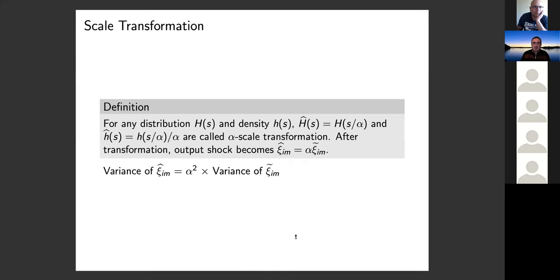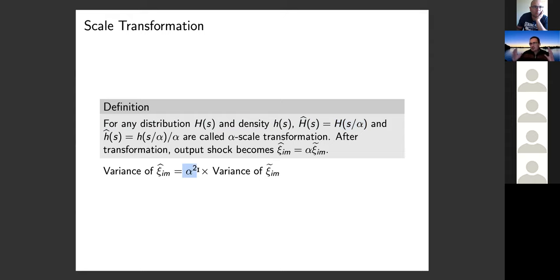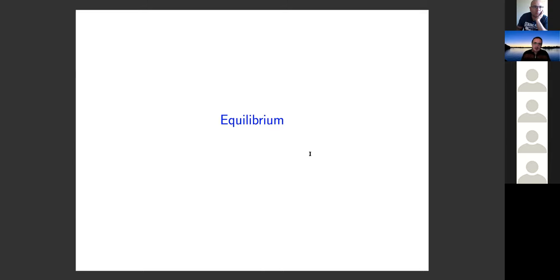Our workhorse is something called a scale transformation. We take any distribution function F and density f and divide them according to a formula to get an alpha-scale transformation. What this does: the mean doesn't change, but the variance becomes alpha squared — the distribution becomes more spread out. The output shock becomes alpha times the output shock. This is very convenient for all our results. We use subgame perfect equilibrium: given the set of rewards, we first characterize the equilibrium among agents.